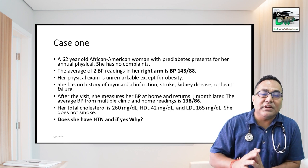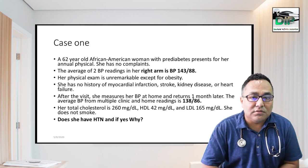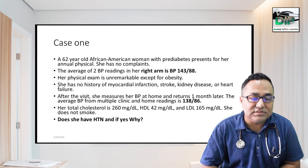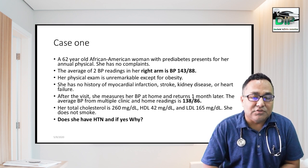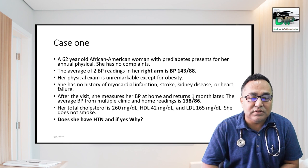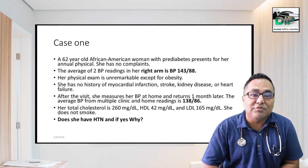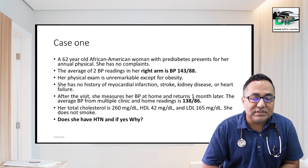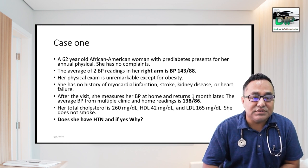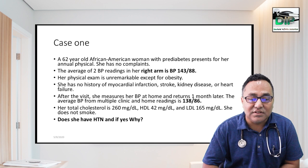The question is whether she has hypertension or not. Definitely she has hypertension, because her clinic BP systolic is more than or equal to 140 and diastolic is around 90. So she definitely has hypertension. But what stage — what classification of hypertension she falls under — we will be discussing in the further slides.